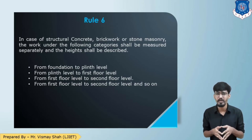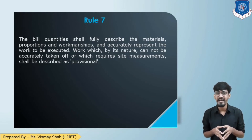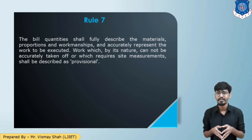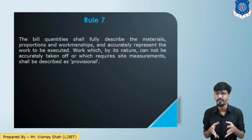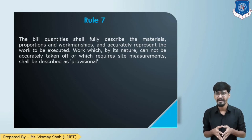Rule number 7: The bill of quantities shall fully describe materials, workmanship, method of preparation, proportions, and accurately define the execution of each item. Work which cannot be defined accurately, or which requires actual measurement after the work has been completed, shall be marked as 'provisional' — that is, provisional quantities and provisional sum, as we have already learned. Some quantities or items cannot be fully known while preparing the estimate, so they are marked as provisional.